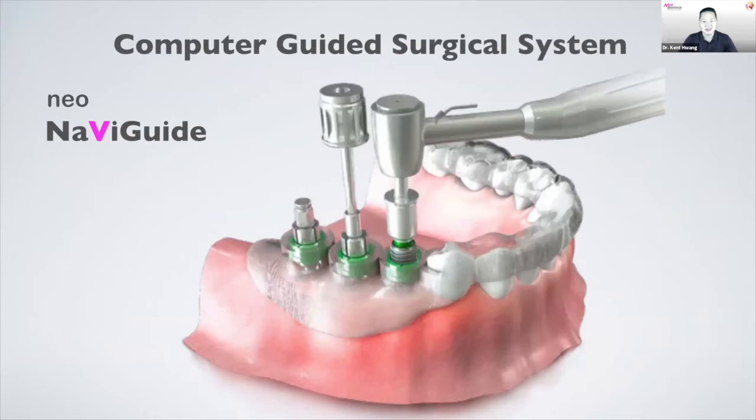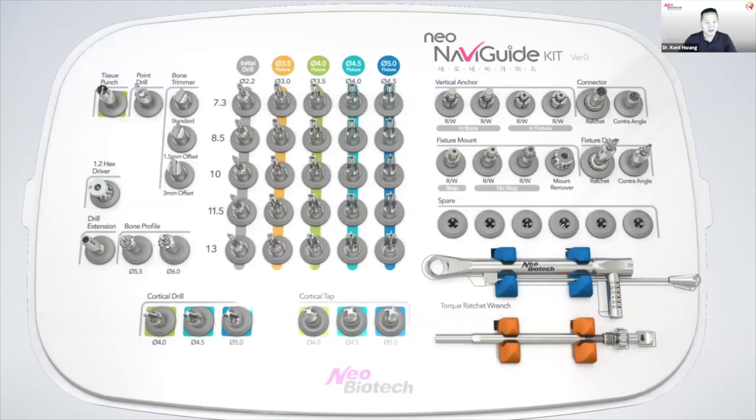What is it? It's the computer-guided surgical system by NeoBiotech — it's called the NaviGuide. This is what the kit looks like. It might look kind of daunting for people who haven't seen it, but it's pretty straightforward, laid out really nicely and simplified. I'm going to go through each of these drills and what they're used for.